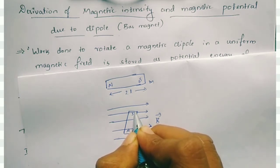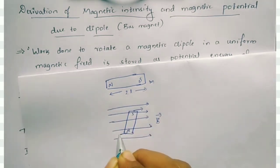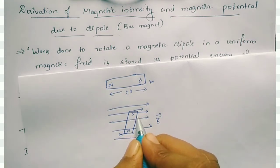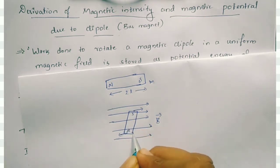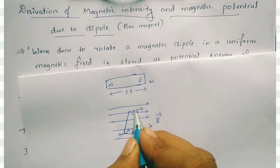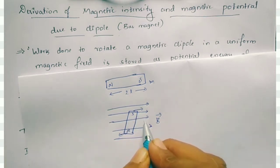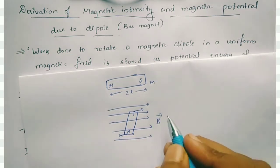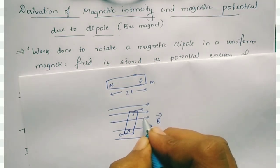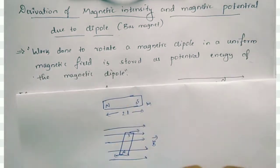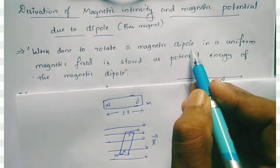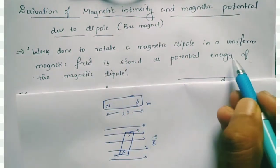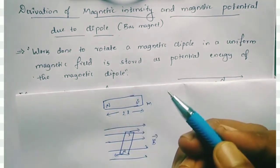When the magnetic bar is kept inside the magnetic field lines, it experiences a torque. Torque means it is a force acting on the two ends equally and oppositely. When the force acts equally and oppositely at both ends, the bar rotates. When the bar rotates due to the magnetic field lines, work done takes place, and that work done is stored as potential energy.